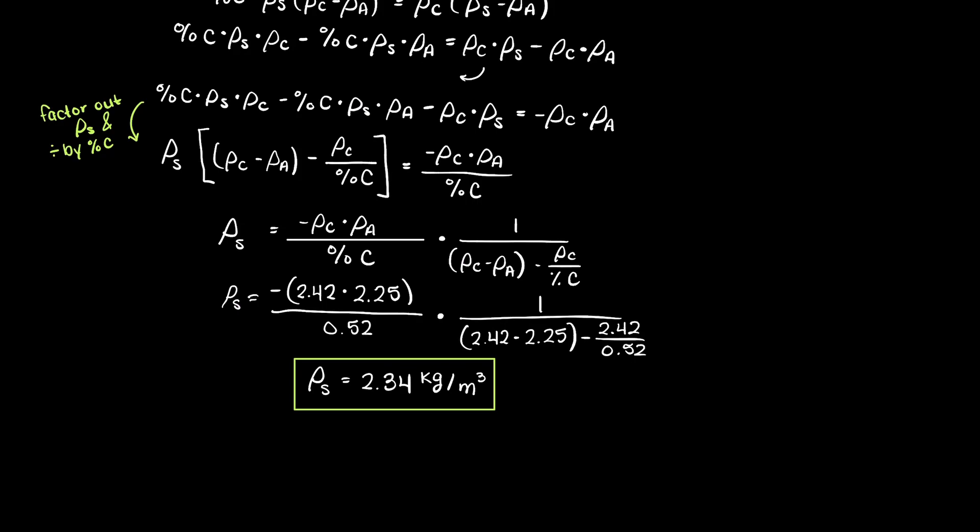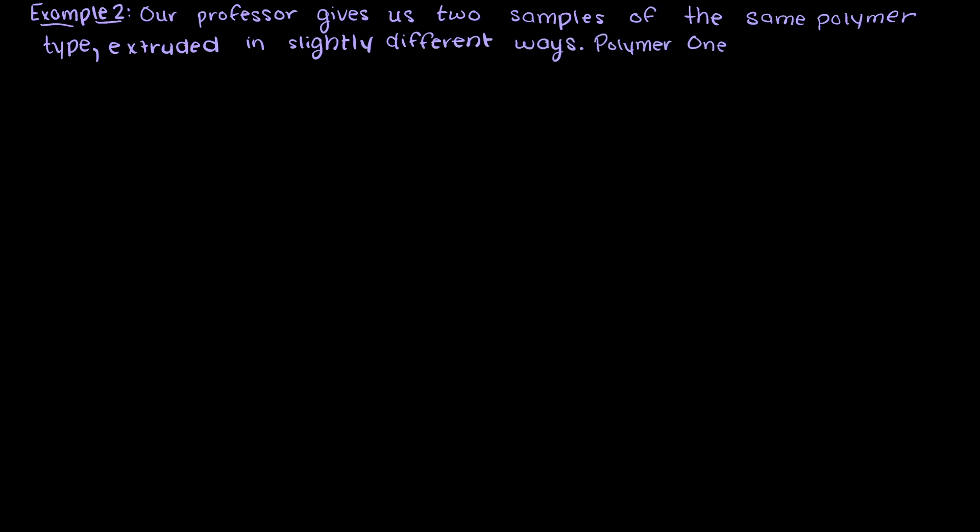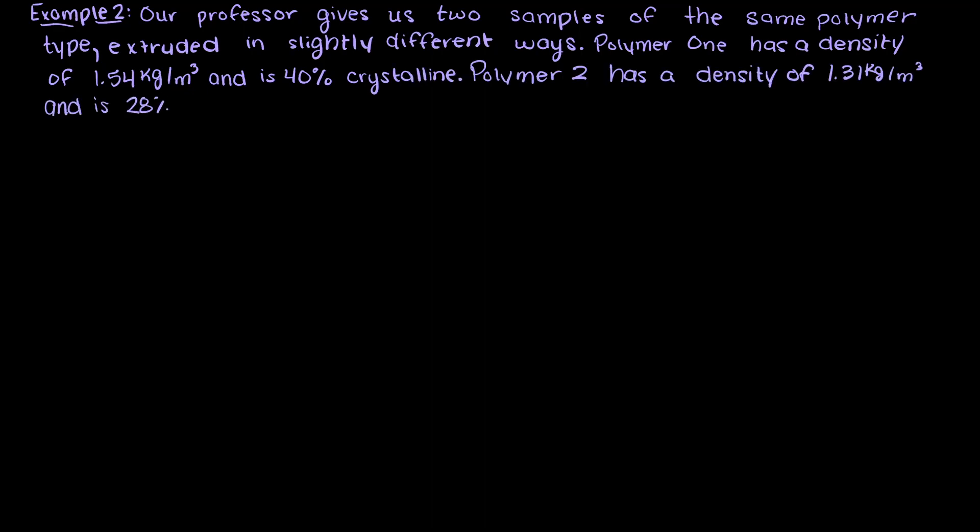Let's go through another example now. Let's say that our professor gives us two samples of the same polymer type, extruded in slightly different ways. Polymer 1 has a density of 1.54 kg per meter cubed and is 40% crystalline. Polymer 2 has a density of 1.31 kg per meter cubed and is 28% crystalline. Now let's try to find the 100% crystalline and amorphous densities. Take a second now and try solving this one on your own and then you can compare your answers to the ones I get.